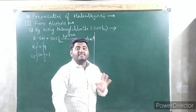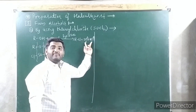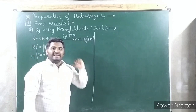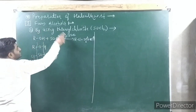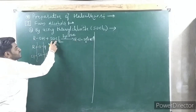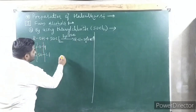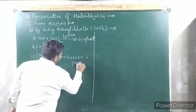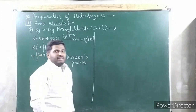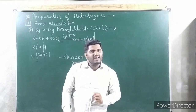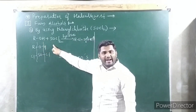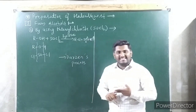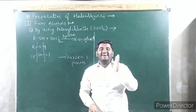This method is a very good method to prepare haloalkanes because the byproducts — SO₂ and HCl — are both in gas form and easily escape, so you get a pure product in good yield. This process of preparation of haloalkanes from alcohol using thionyl chloride is known as Darzen's process.